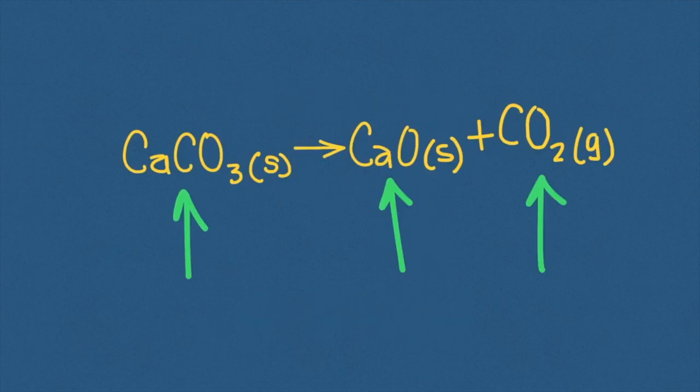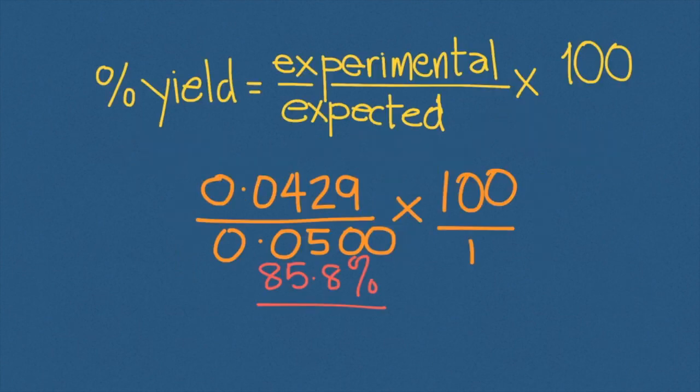Now, the balanced equation suggests that one mole of calcium carbonate should generate one mole of calcium oxide. At least this is the theoretical expectation, the expected yield. But the experimental value does not always agree with the expected value.